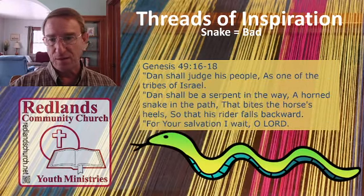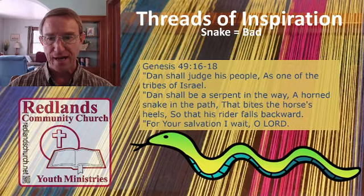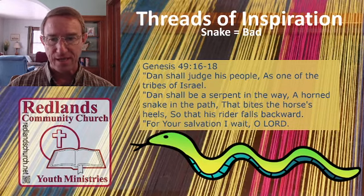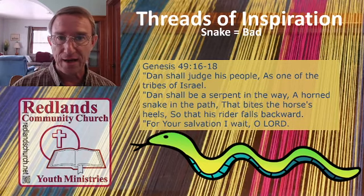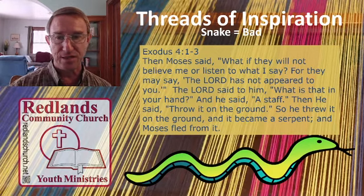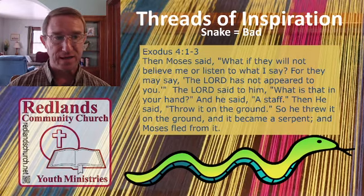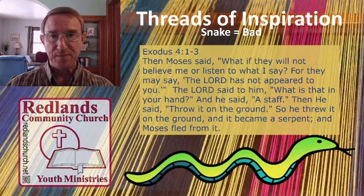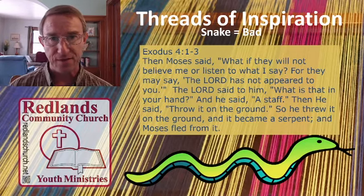Here's an example with the tribes of Israel: 'Dan shall be a serpent in the way, a horned snake in the path that bites the horse's heels so that the rider falls backwards.' Also, Moses' staff was turned into a snake to show God's power — he demonstrated that at the burning bush, and then Moses and Aaron demonstrated that to Pharaoh. These snakes demonstrated God's great power. When Moses first sees it, he runs away, and God tells him to pick it up by the tail.